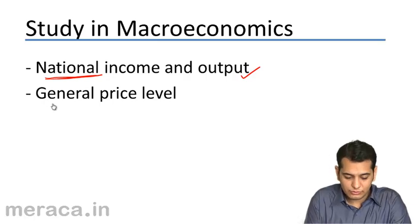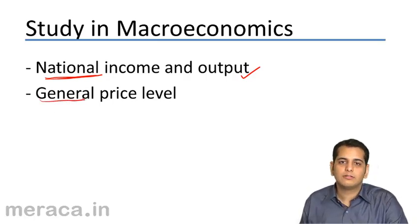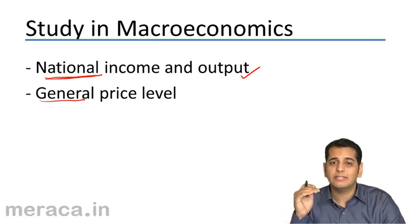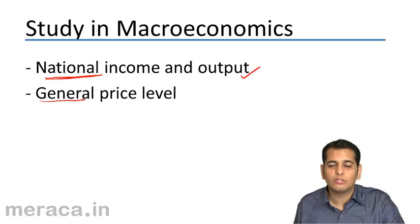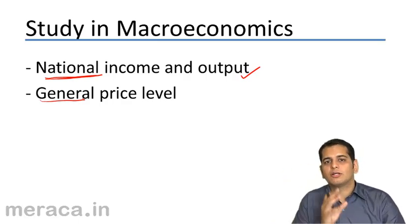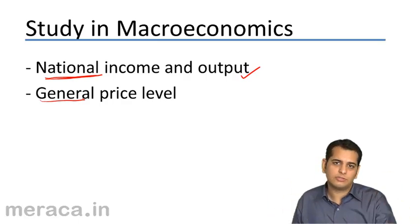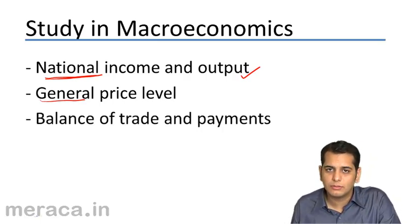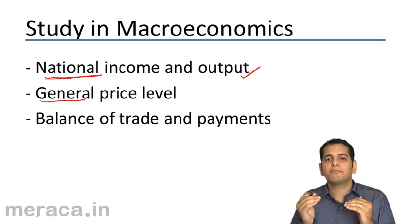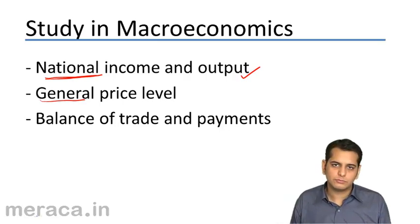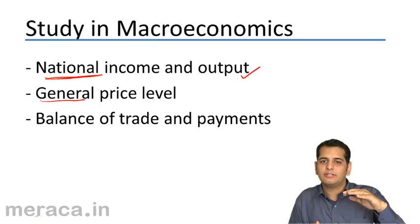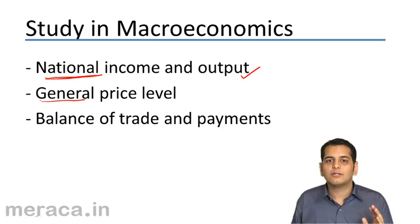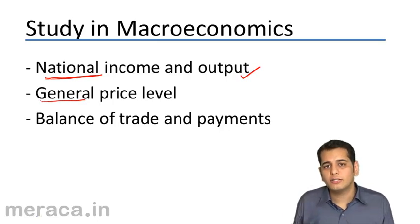General price level is not the pricing of a particular product, but the general price level prevailing in a country — that is, the inflation level, the cost index level, the level of wholesale prices. It is the combined price of all the products in a country. Balance of trade is the striking of a balance between imports and exports. If we have more imports than exports, we have a deficit; if exports are more, we have a surplus. A country always tries to strike a balance between its imports and exports.